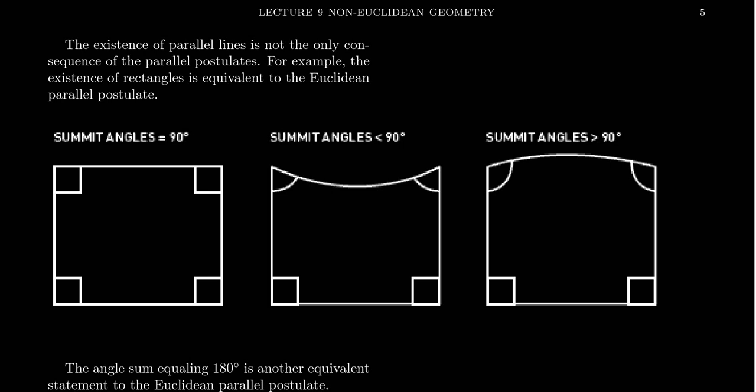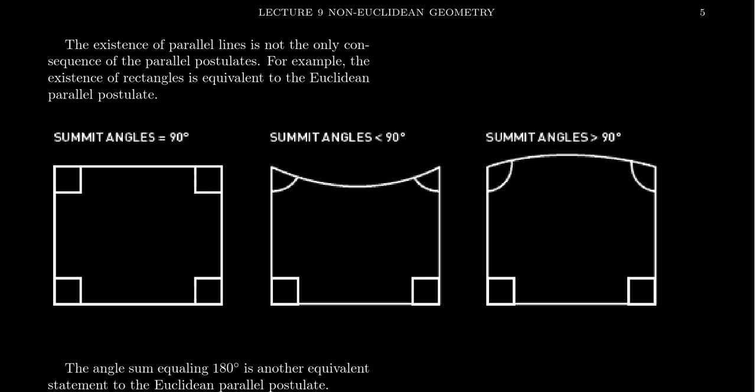In this video, I want to conclude our discussion of non-Euclidean geometry. We've explored some manifolds — elliptic and hyperbolic — to give some examples of things that locally behave like Euclidean geometry, but globally can look a little bit different.